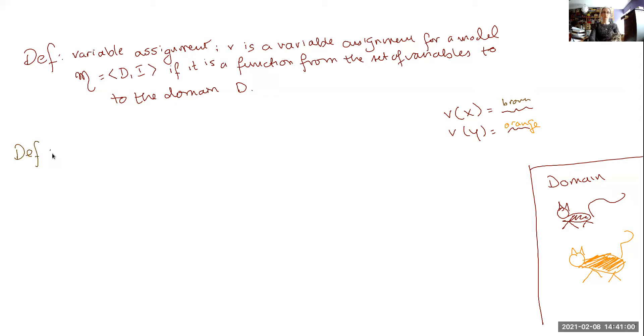The second definition that we have is the notion of one variable assignment being a variant of another. But we're going to specify in what way it is a variant. It's going to be a variant because of what it assigns to a single variable. So this is the notion of an x variant.